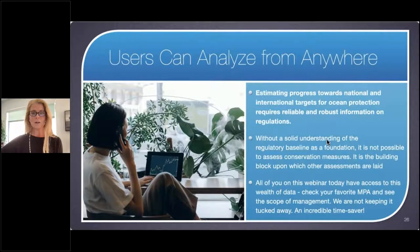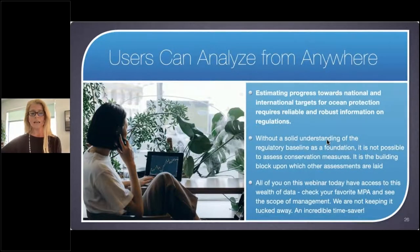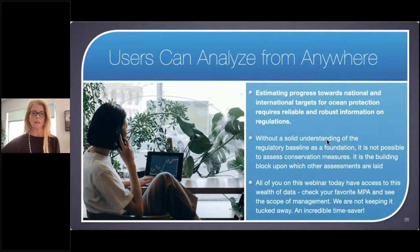All of you on the call today can log into your favorite MPA and see the comprehensive scope of what is allowed and what is prohibited. The Navigator database facilitates transparent, worldwide analysis of the regulatory framework of our Blue Planet's MPAs. We're not hiding this data — we want you to use it. It can be really valuable in estimating progress towards national and international targets for ocean protection. Without a solid understanding of the regulatory baseline as a foundation, it's not possible to assess conservation measures. Navigator is a building block upon which other assessments are laid.